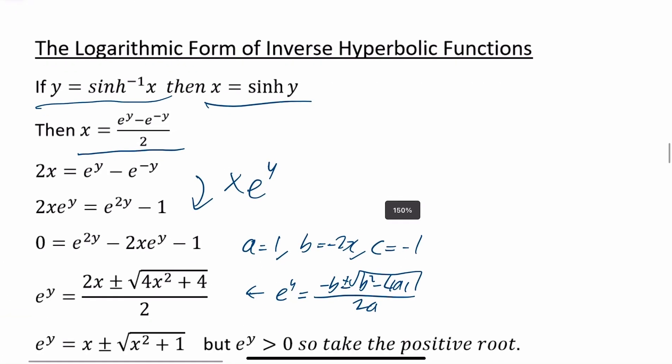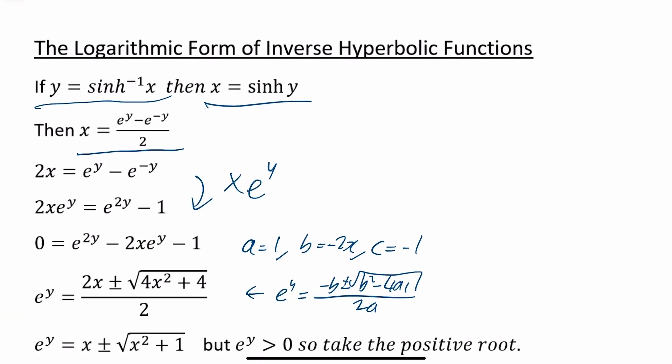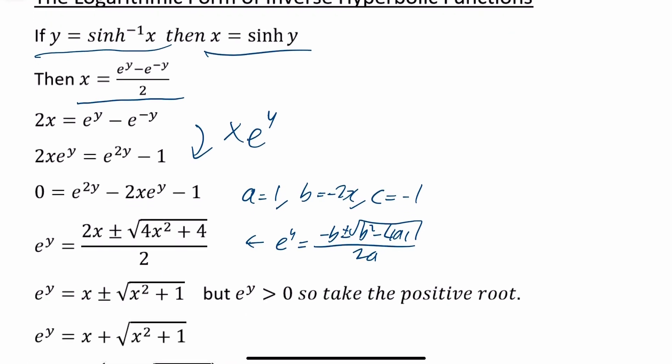Now we're going on to the logarithmic form of inverse hyperbolic functions. It says y is equal to the inverse hyperbolic sine; we want to find the logarithmic form. First of all, you let x equal hyperbolic sine of y, and then using your basic definition of hyperbolic sine, that means x is equal to e to the power of y minus e to the minus y, all over 2.